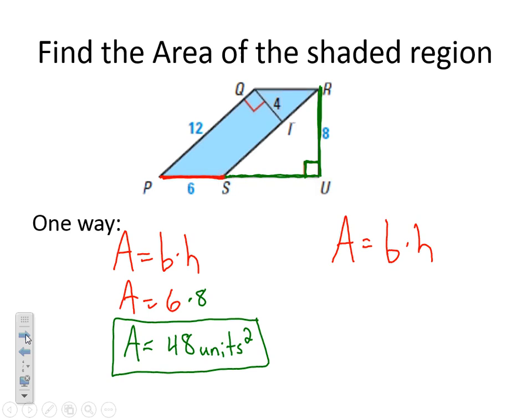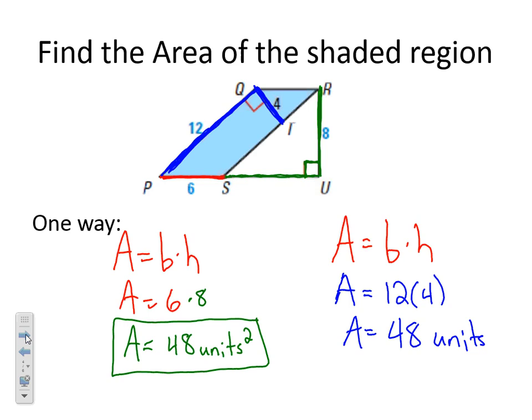Now if I look at the exact same problem, but consider this to be my base — so if I make my base 12 — I need my height to be perpendicular, so it has to have the right angle. Right here I have my right angle, so my height in this case would be 4. Area equals 12 times 4, which is 48 units squared. We solved it two different ways and got the same answer both times.